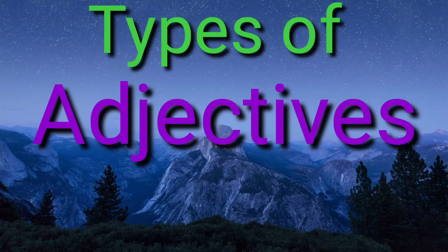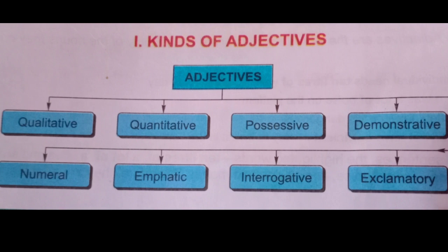Hello friends, welcome to KSD Learning Time. Today we are going to learn types of adjectives. There are eight kinds of adjectives: first, qualitative adjectives; second, quantitative adjectives; third, possessive adjectives; fourth, demonstrative adjectives; fifth, numeral adjectives; sixth, emphatic adjectives; seventh, interrogative adjectives; and eighth, exclamatory adjectives.